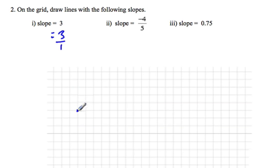So you put a point on the corner of a grid and you go up 3 and over 1, and then you draw a line joining the two points.